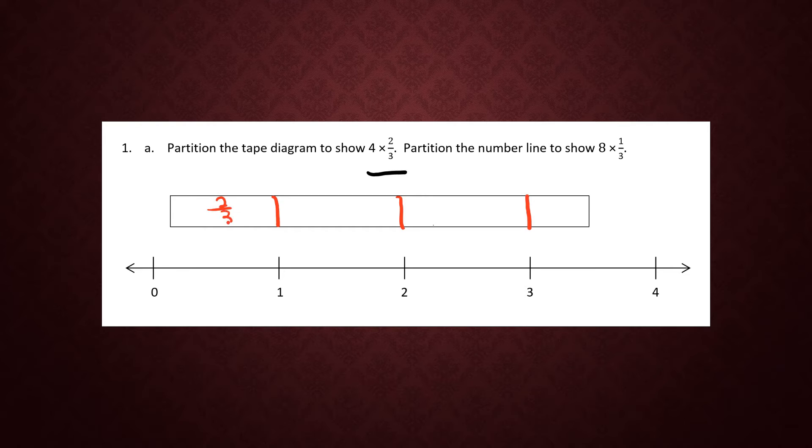2 thirds, and 2 thirds. So far we have 4 sections of 2 thirds, which equals 4 times 2 thirds.